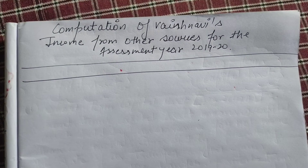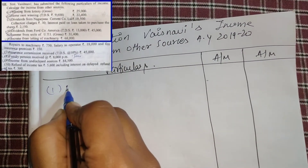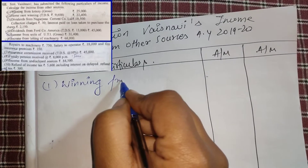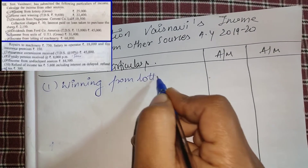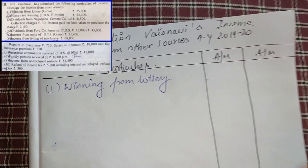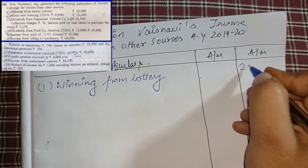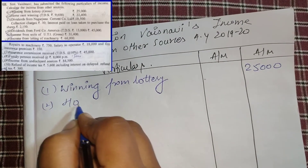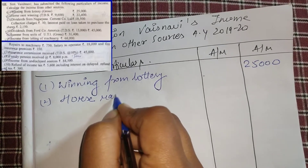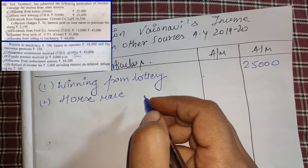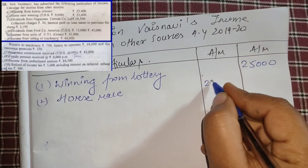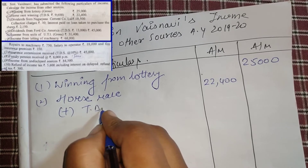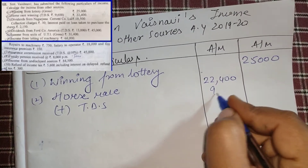Here is the question — you can take a screenshot. Computation of Vaisnavi's income from other sources, assessment year 2099. First, winning from lotteries: we will write it in gross — winning from lotteries is 25,000. Next, horse race winning is 22,400, but TDS is given. So we add TDS back: horse race winning 22,400 plus TDS 9,600.